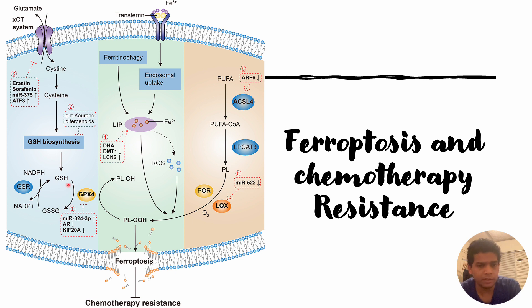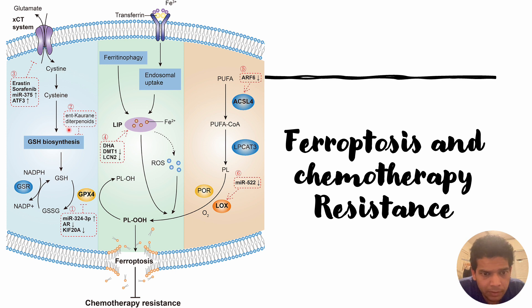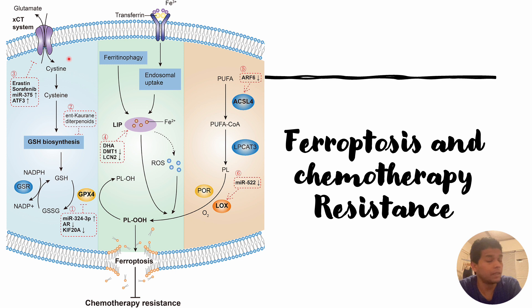In order to inhibit GSH, the GSH biosynthesis pathway can be targeted using the inhibitor ENT-Corin diterpenoids.